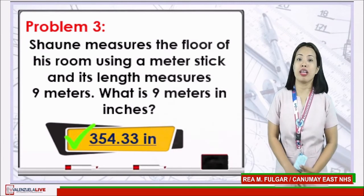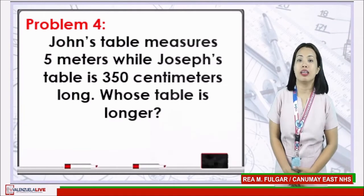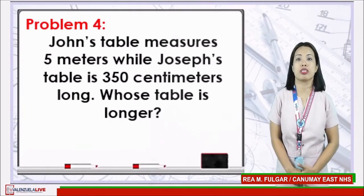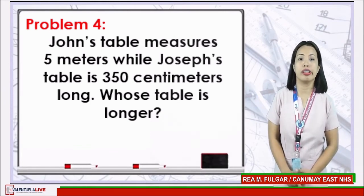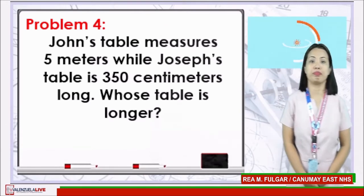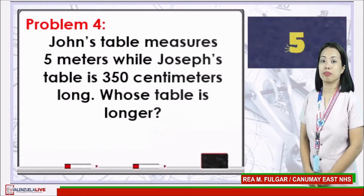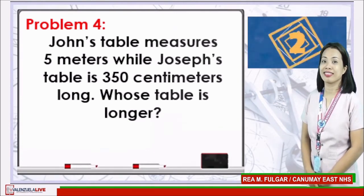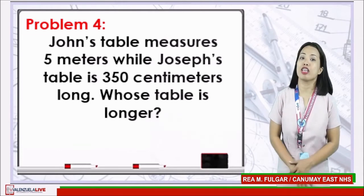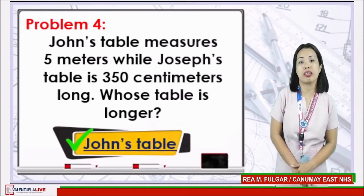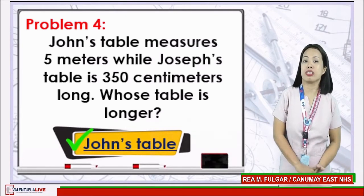Awesome! Let's see if you can do the next number. Problem number 4: John's table measures 5 meters while Joseph's table is 350 cm long. Whose table is longer? Timer starts now. If your answer is John's table, excellent! Because it is 150 cm longer than Joseph's.